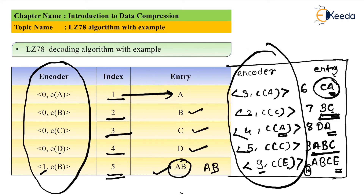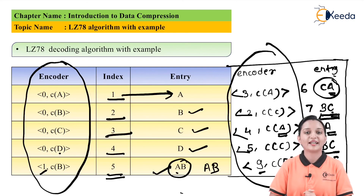Hence, if you observe the original message reconstructed by decoding, it is: A, B, C, D, A, B, C, A, B, C, D, A, B, C, A, B, C, D, A, B, C, A, B, C, E. In this way, we can encode data into another format so that it gets compressed in size, as well as encrypted for the purpose of security. At the receiver side, the receiver can easily decode the data and get the exact replica of the original message. Thank you for watching this video. Stay tuned with Ekeeda, subscribe Ekeeda.